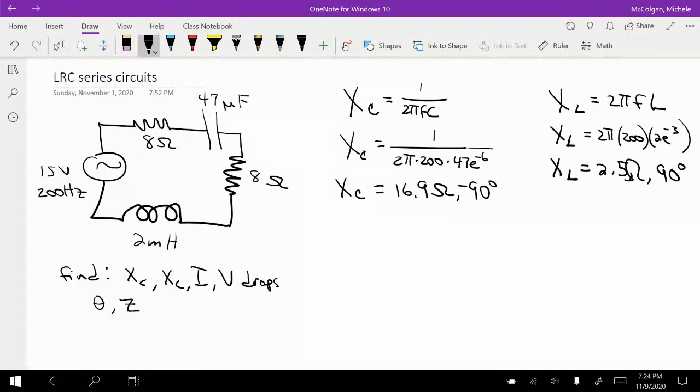So when we think about our phasor triangle, we're going to have XL and XC. My XL is in the positive 90 degree direction, but it's not very big. And my XC is really much bigger. This is my R.